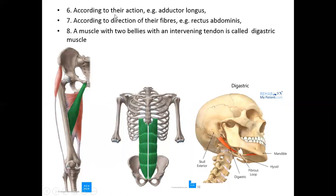Another way is naming according to the action of the muscle. Adductor longus is present in the medial compartment of the thigh and causes adduction — it is long, so called adductor longus. Near to it is adductor brevis, which also causes adduction but is a short muscle, hence called brevis.